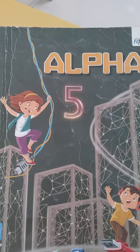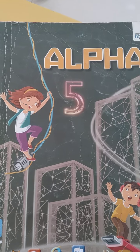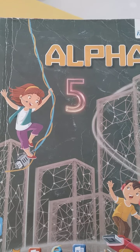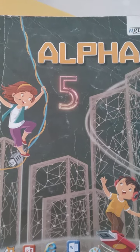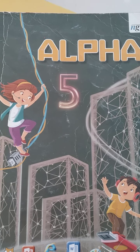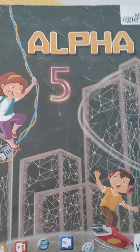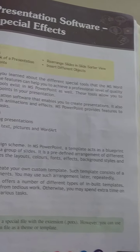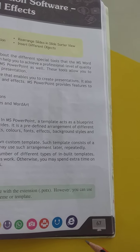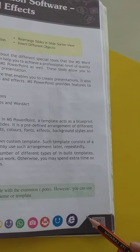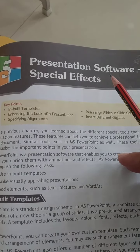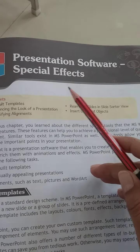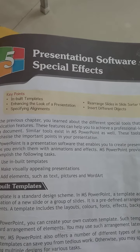Today we are going to start our second chapter of essay 2 from your alpha book. So open chapter 5th, on page number 67. The chapter name is Presentation Software Special Effects.